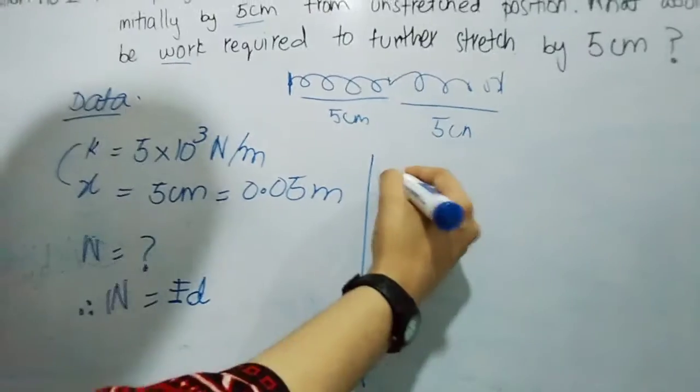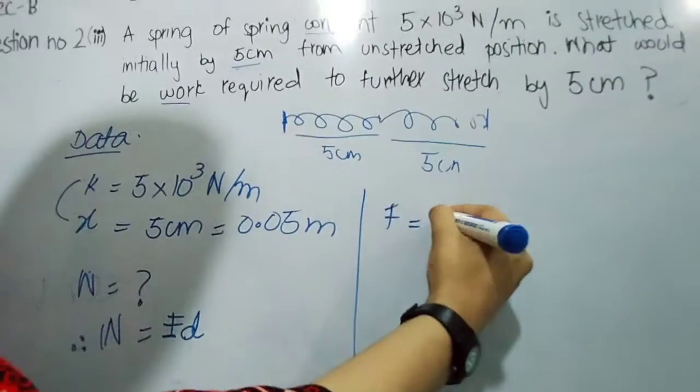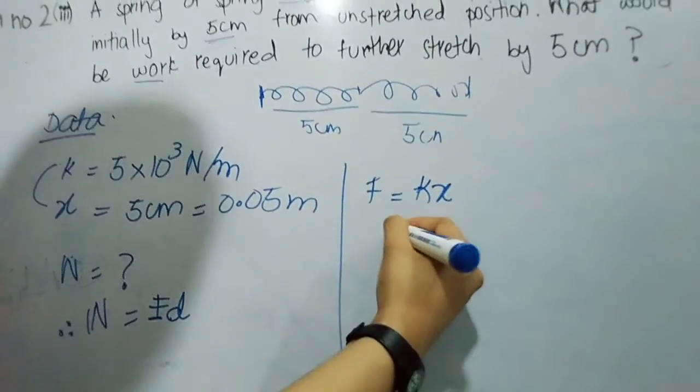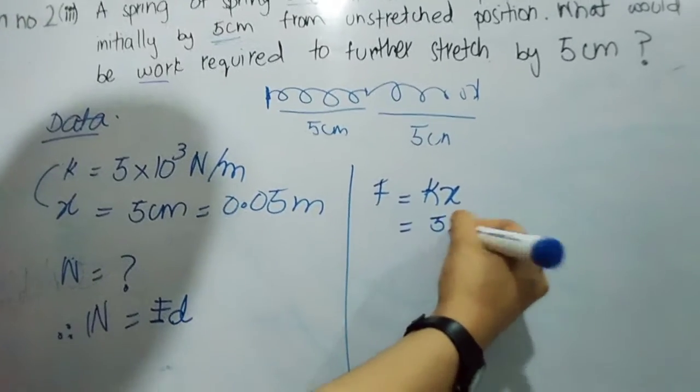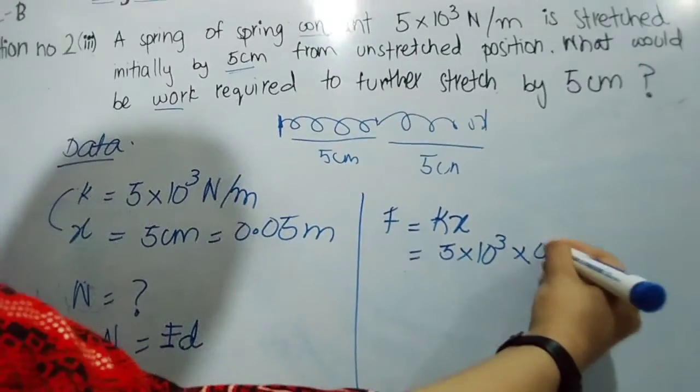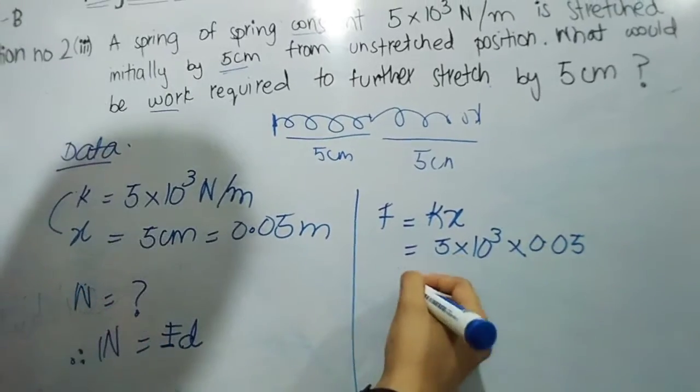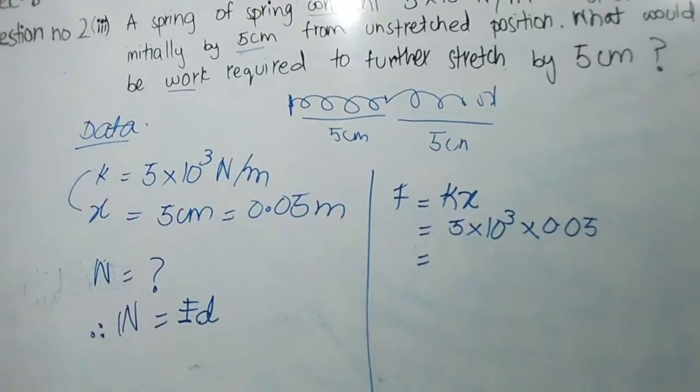So here the solution is F equals kx. K is 5×10³ into 0.05. You can take out your calculators and check the answer.